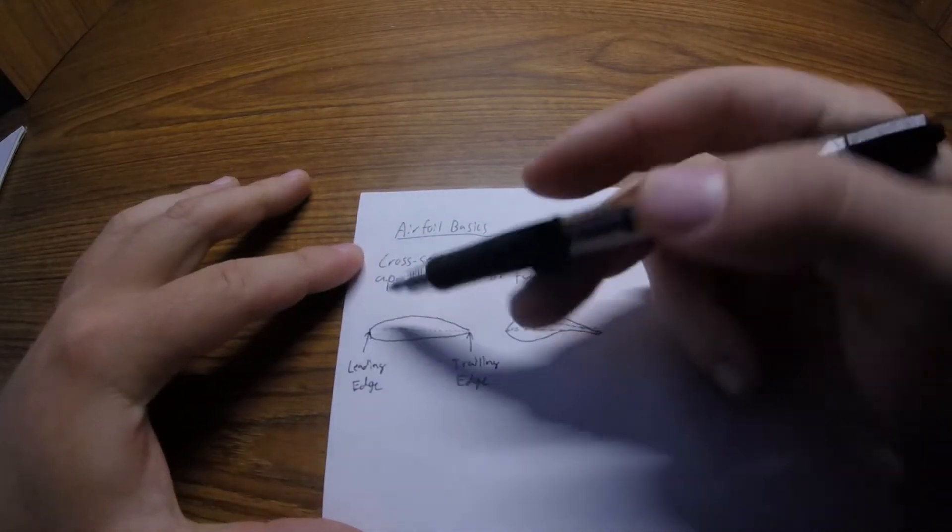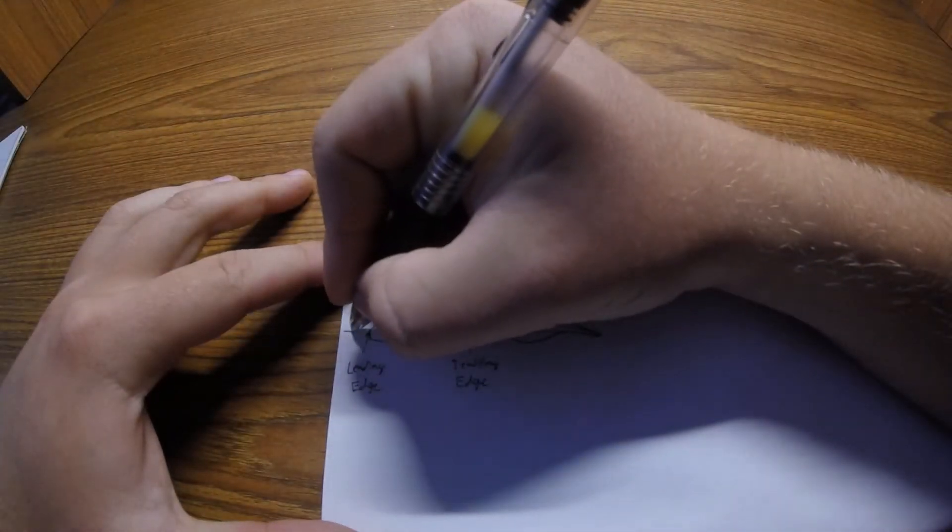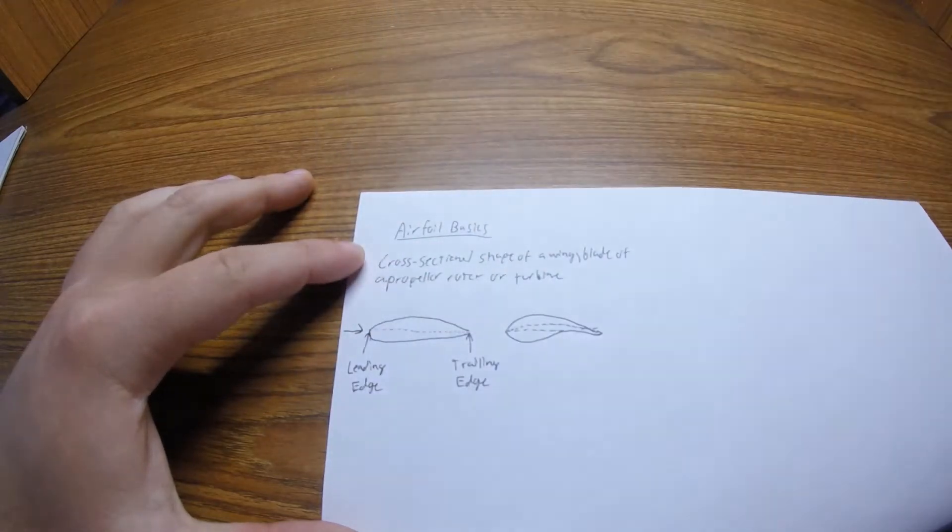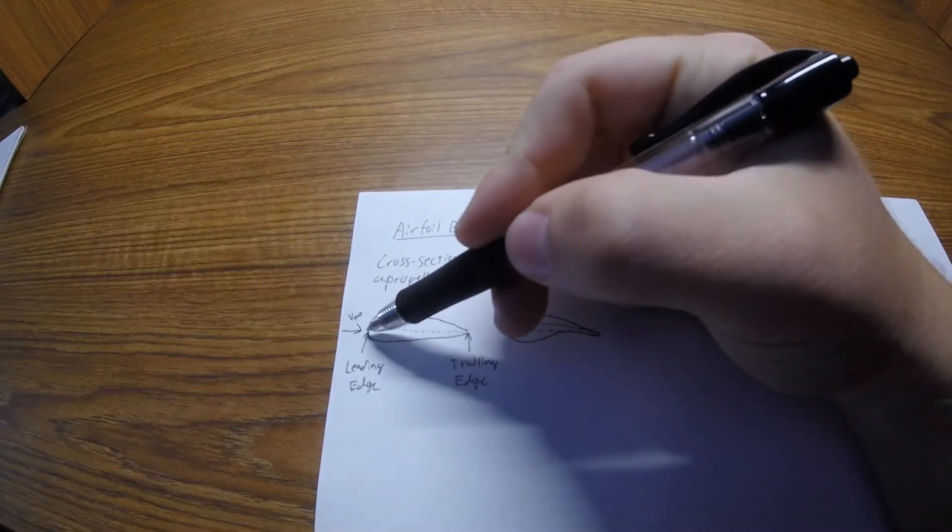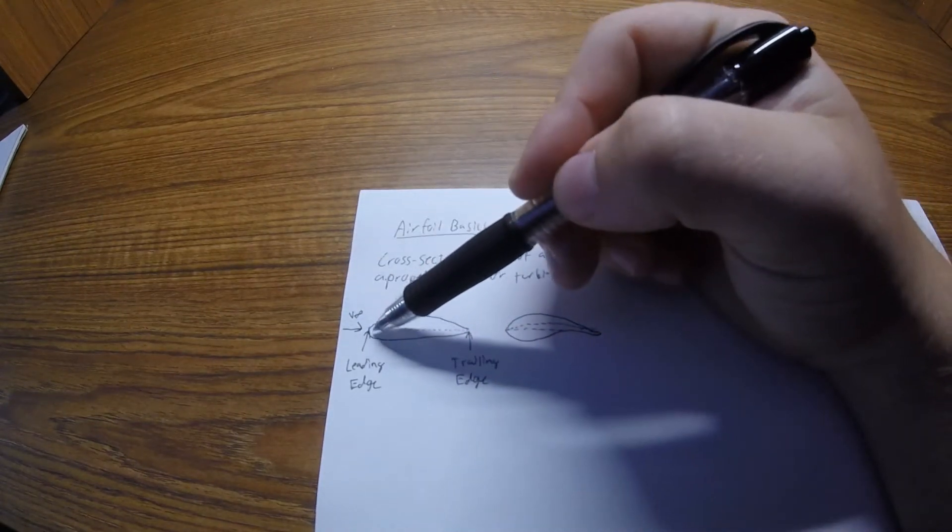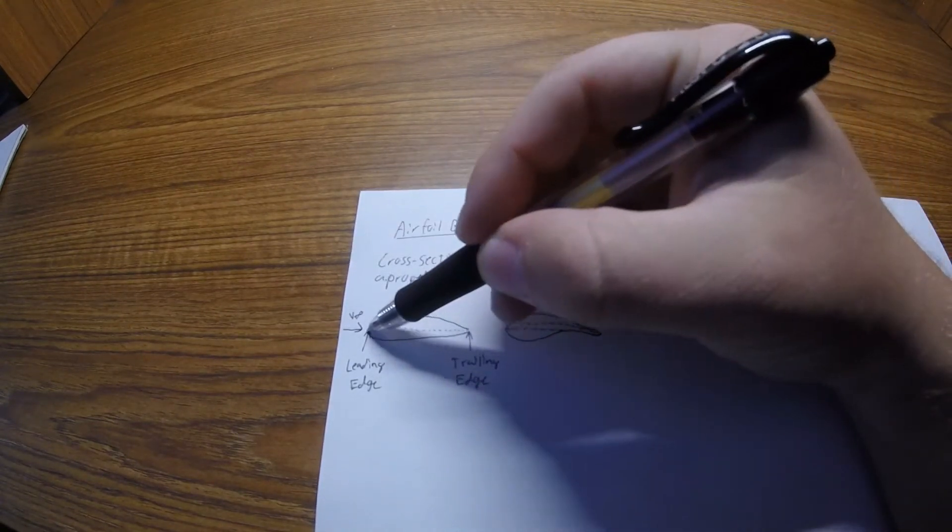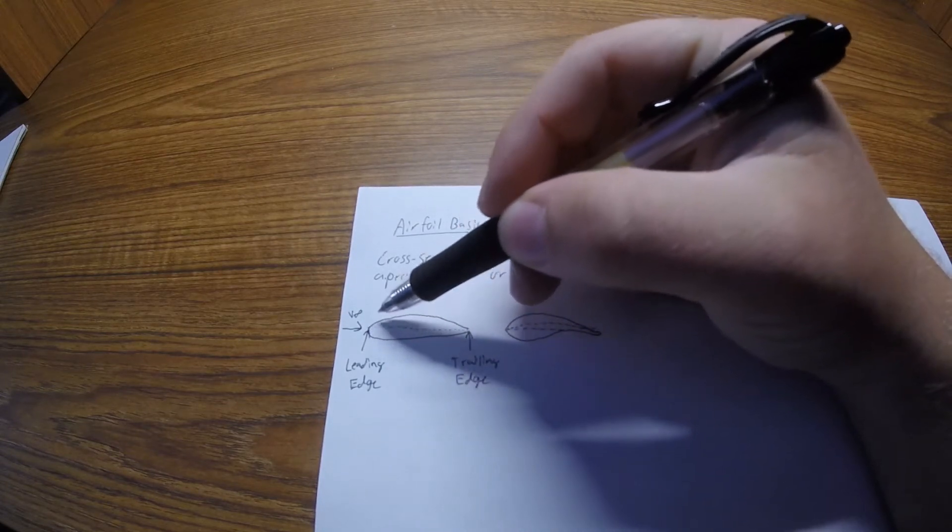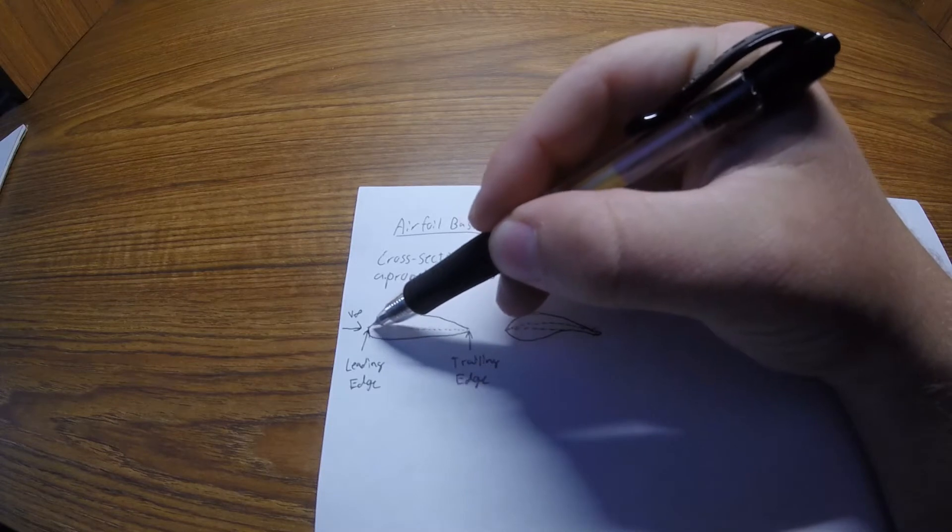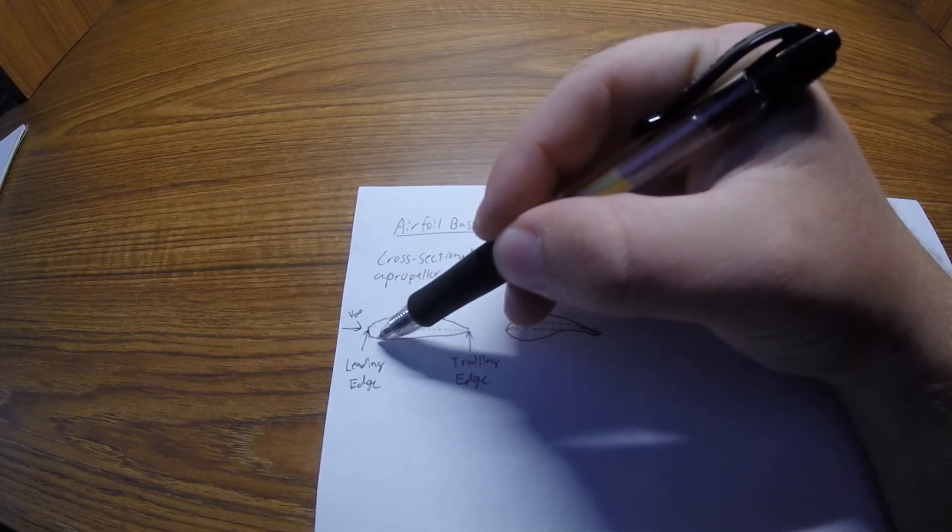The front here, if the wind is coming this way, the first part it hits is the leading edge. A distinct characteristic of airfoils is this rounded leading edge. It's very rounded and all airfoils you'll see will have a rounded leading edge.